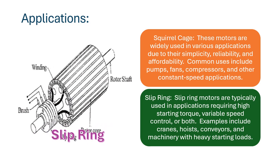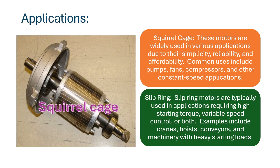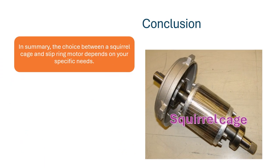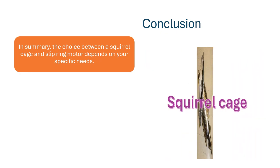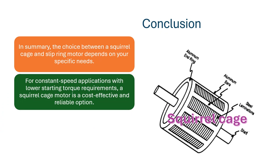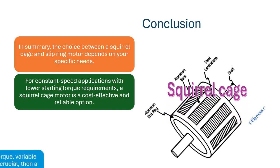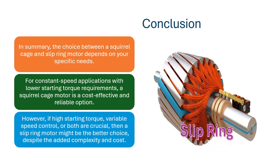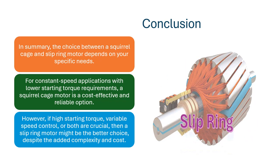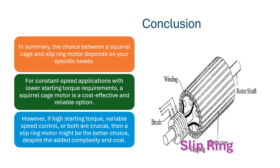Examples of slip ring motor applications include cranes, hoists, conveyors, and machinery with heavy starting loads. In summary, the choice between a squirrel cage and slip ring motor depends on your specific needs. For constant speed applications with lower starting torque requirements, a squirrel cage motor is a cost-effective and reliable option. However, if high starting torque, variable speed control, or both are crucial, then a slip ring motor might be the better choice, despite the added complexity and cost.